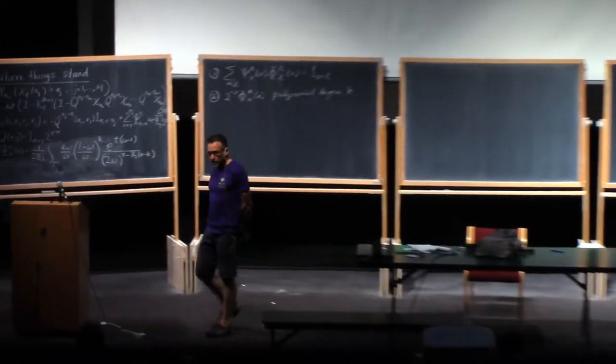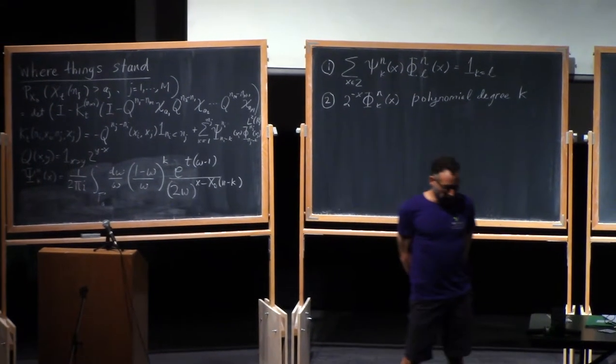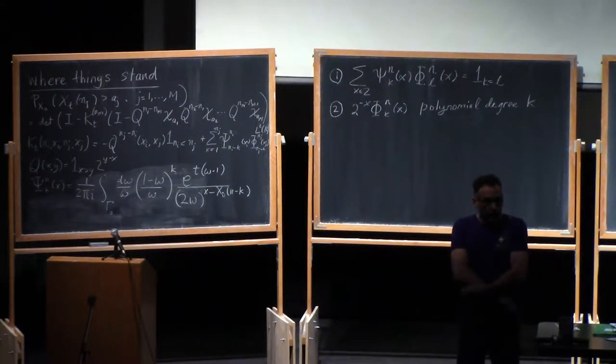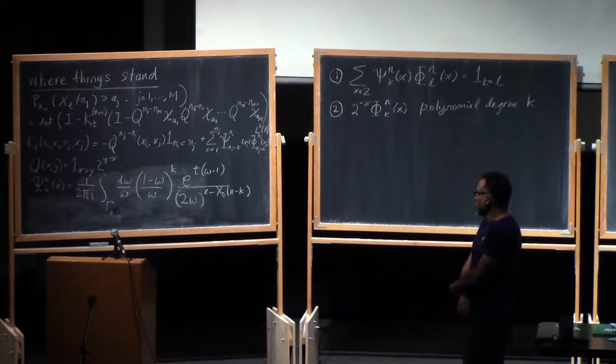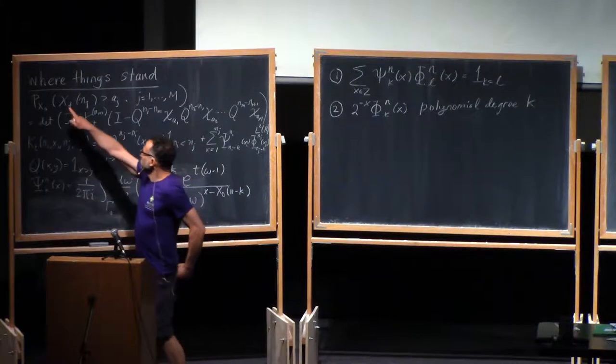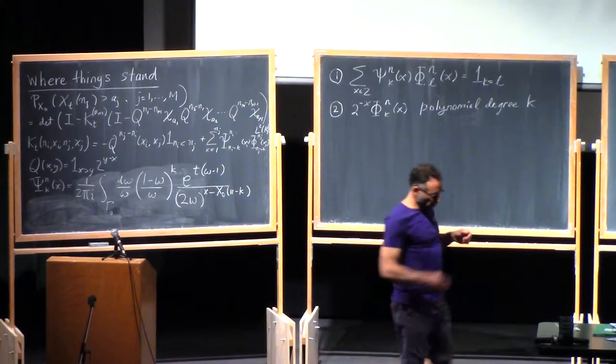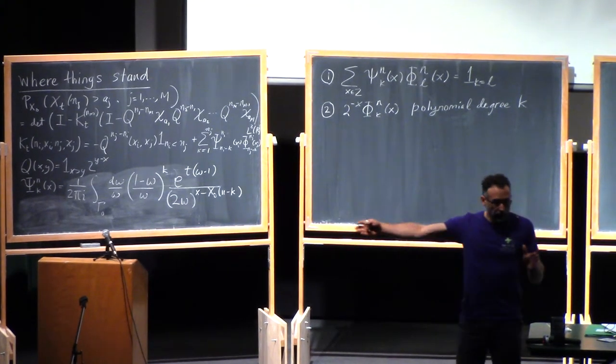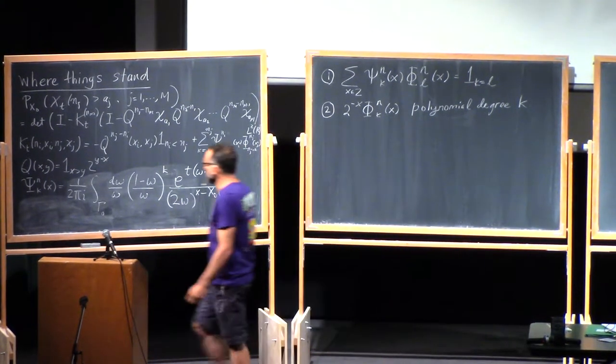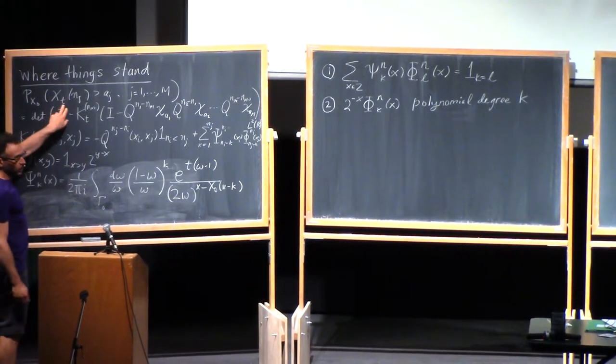So the result of yesterday's lecture is that we have this result of Borodin, Ferrari, Prahofer, and Sasamoto, that if you take the TASEP particles, so X_T^{N_j} is just the N_j-th particle - remember there's a rightmost one and they're ordered backwards - and so you start with some initial configuration of such things.